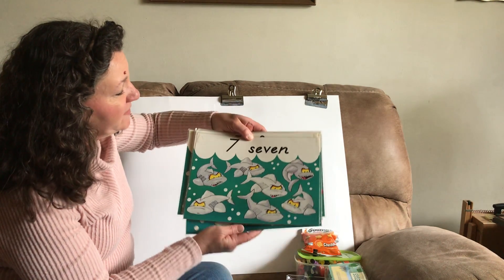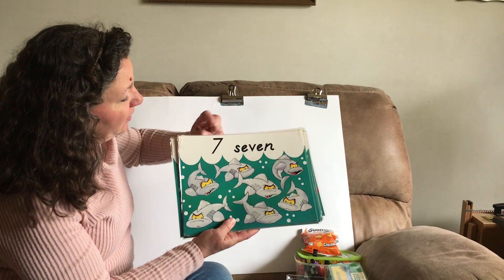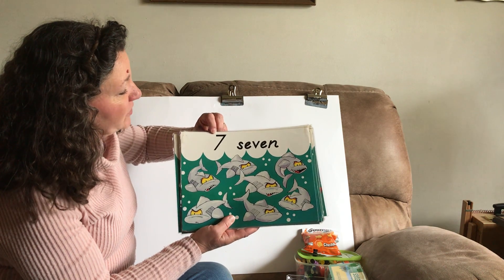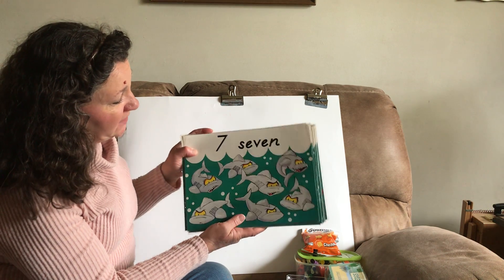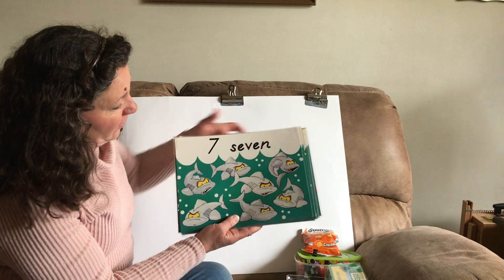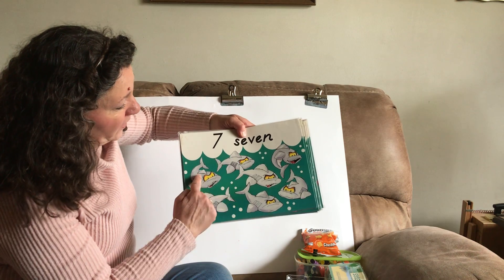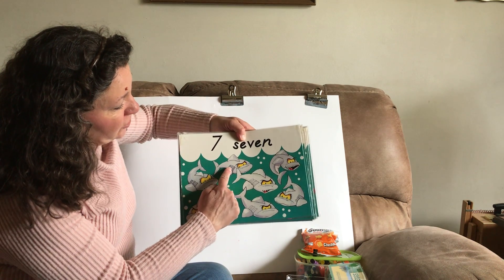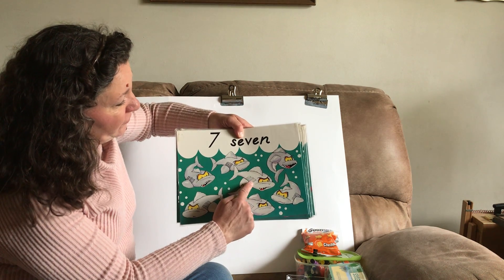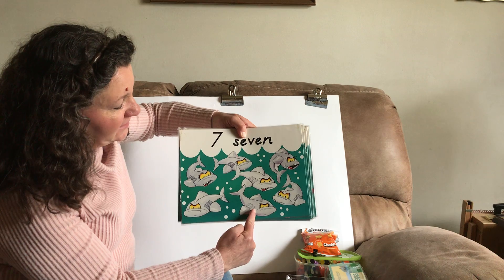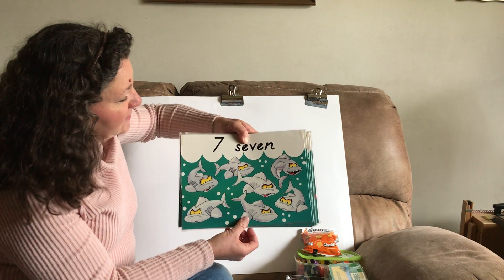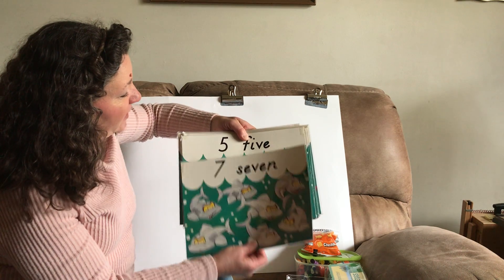What is this number here? Number 7. Let's count the sharks together: 1, 2, 3, 4, 5, 6, 7.